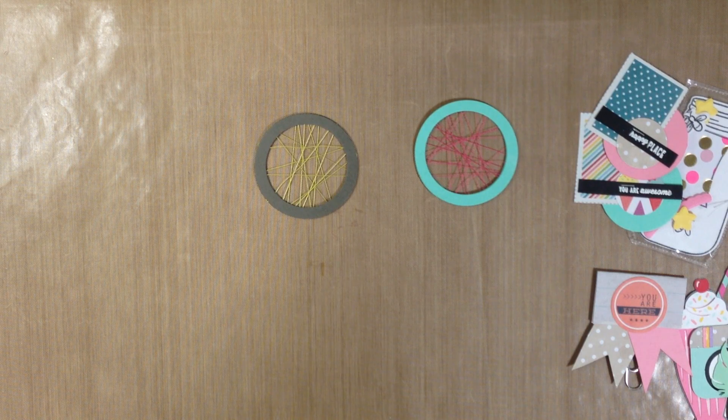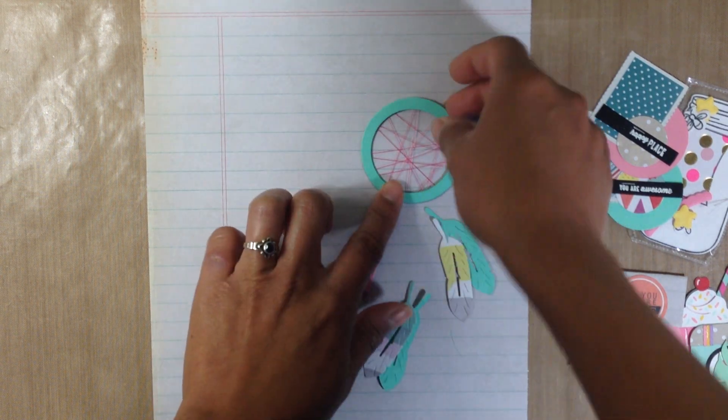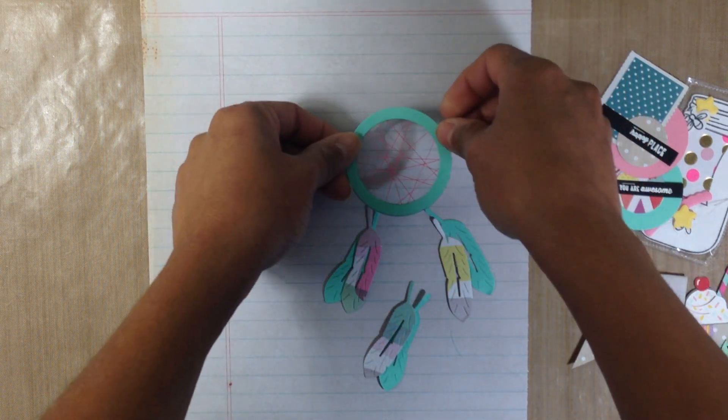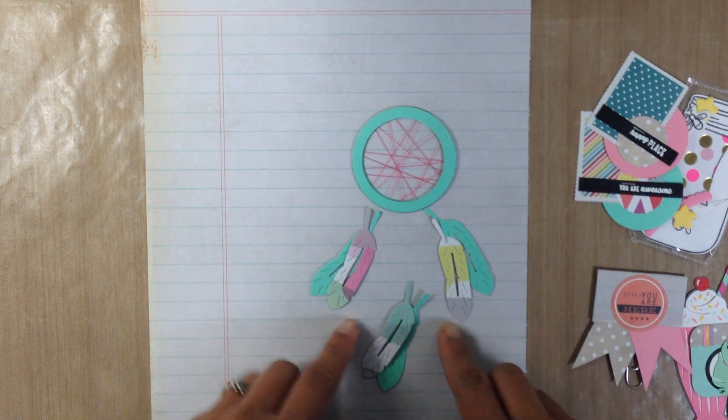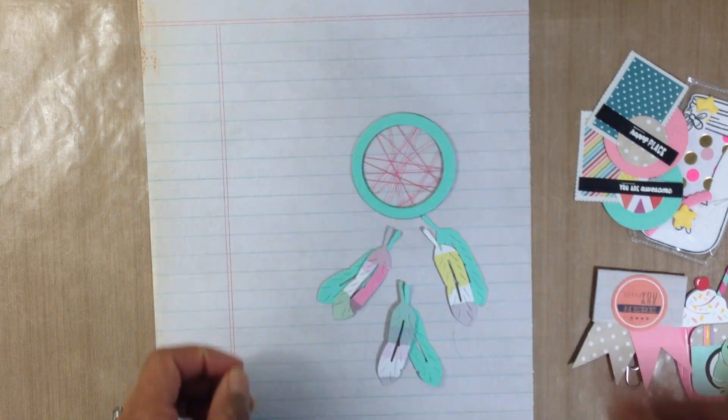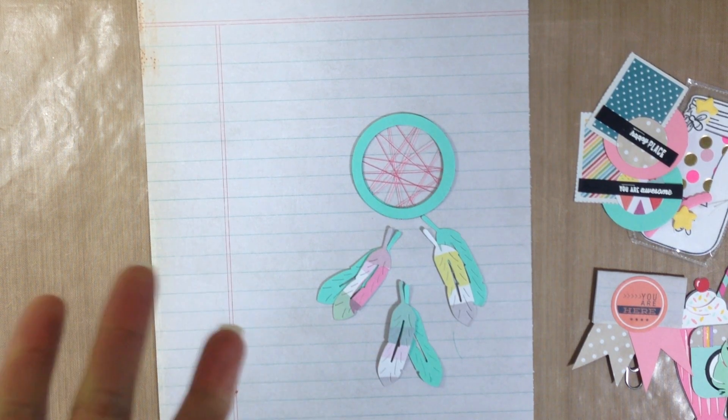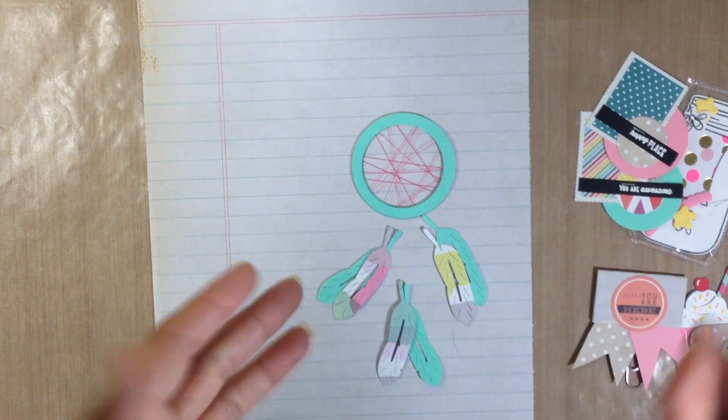But when you would get it you would give it to them like this and then they could put feathers on it to make it look like this and then you can just run a piece of twine underneath and then glue it in between and then you can stick your little feathers hanging from there and that'll make a really cute dream catcher for a project life card, a scrapbook layout, a card.